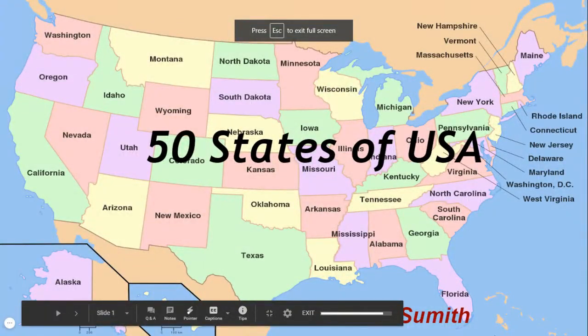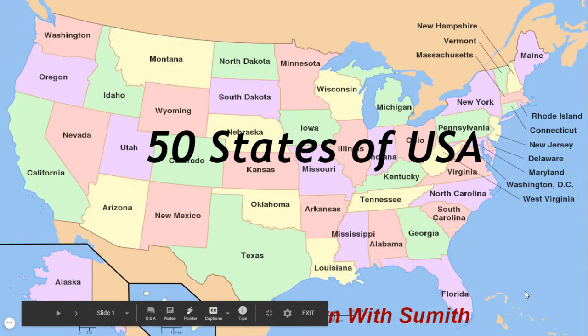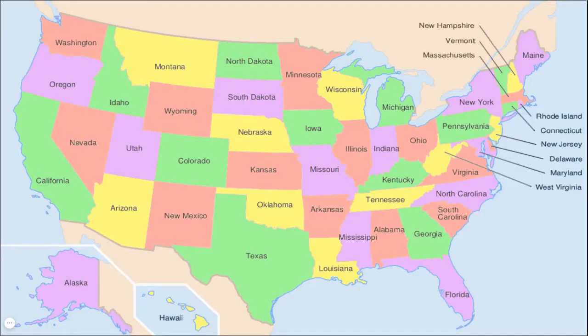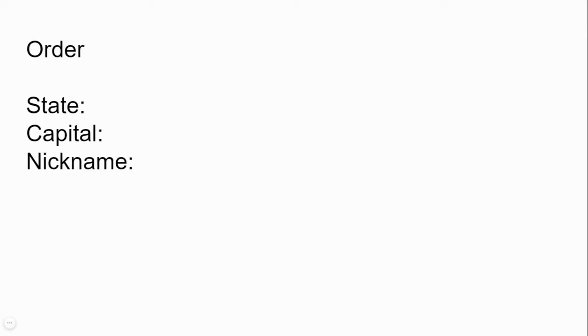Hello friends, welcome to my channel Learn with Summit. Today's interesting and awesome topic is about the 50 states of the USA. This is the United States of America flag — it has 13 original colonies and 50 stars representing the 50 states. This is the USA map showing its location.